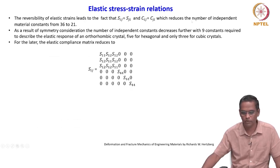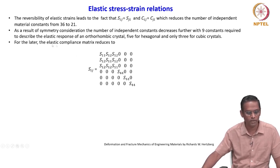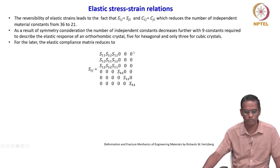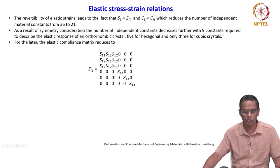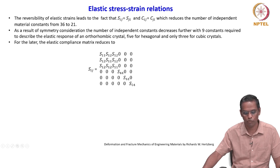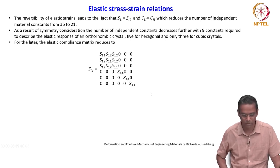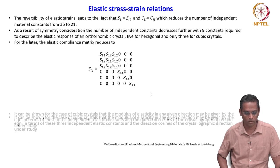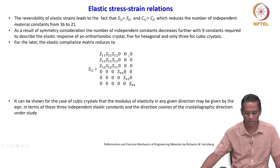For the cubic system, the elastic compliance matrix reduces to a 6×6 matrix where many components become zero because of symmetry considerations. It is expressed in terms of S11, S12, and S44 — only these 3 stiffness constants are able to describe the anisotropic nature of a cubic crystal.